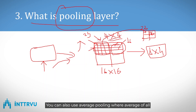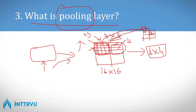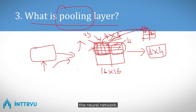You can also use average pooling, where the average of all values in a region represents the complete region. This pooling layer helps reduce the dimension of feature maps and thus reduces the complexity of the neural network.